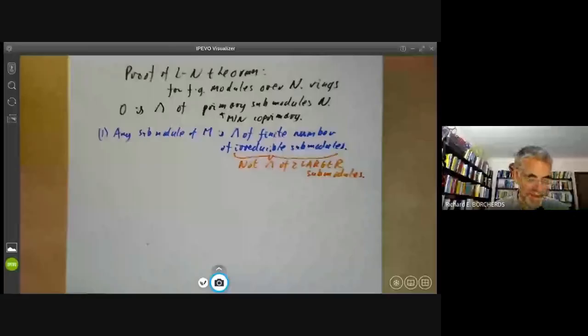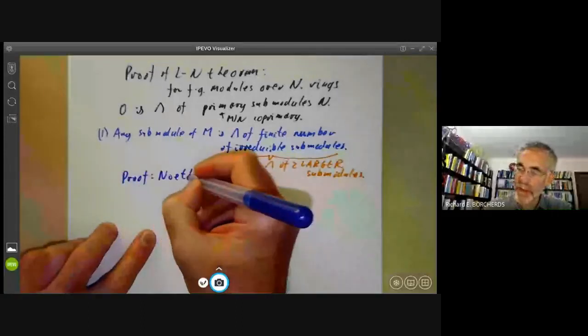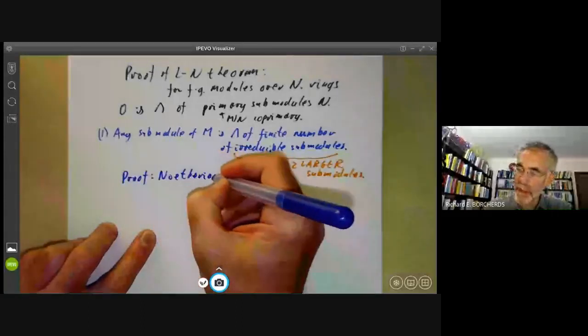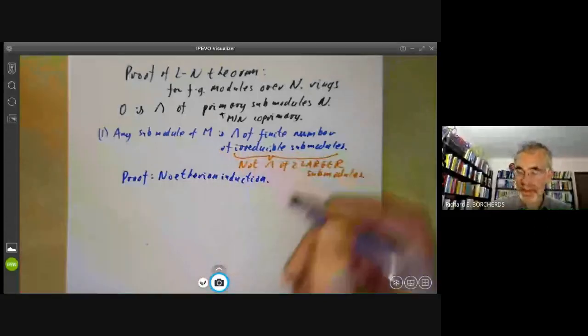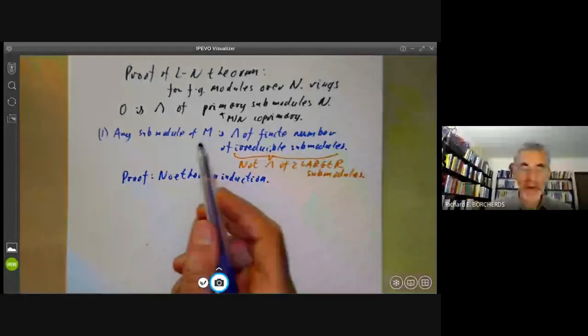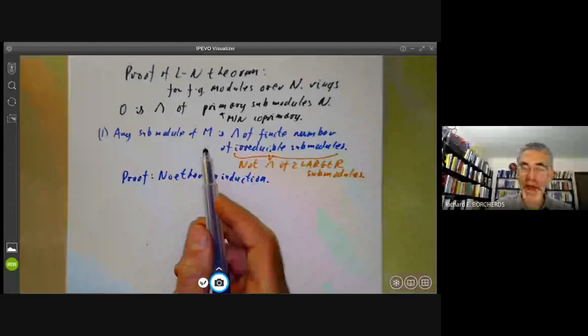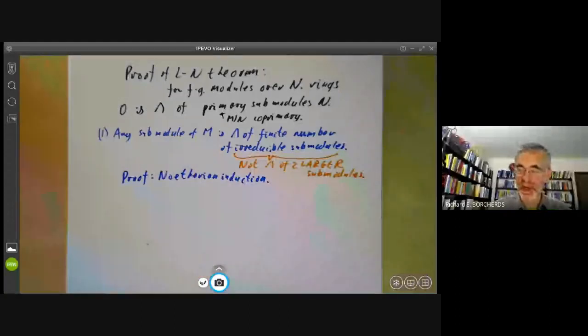Now, the proof of this is very easy. You can just write down in two words: Noetherian induction. This means the submodules of m have this Noetherian property that any non-empty subset has a maximal element, because that's true because m is finitely generated over a Noetherian ring.